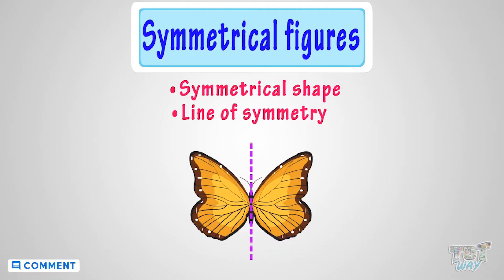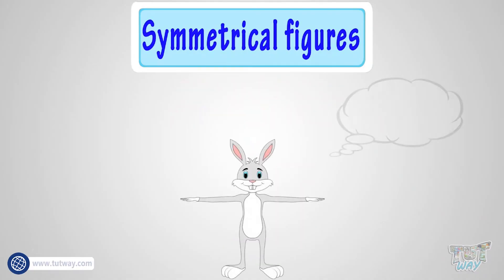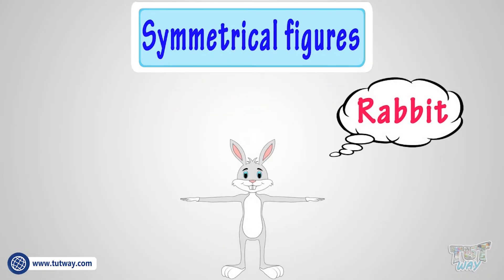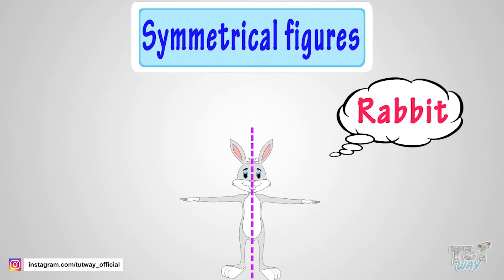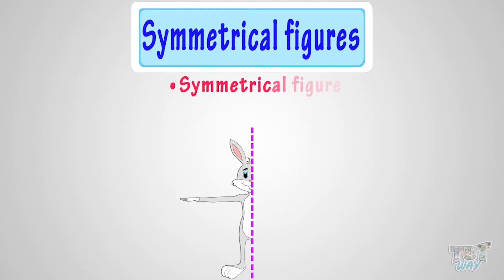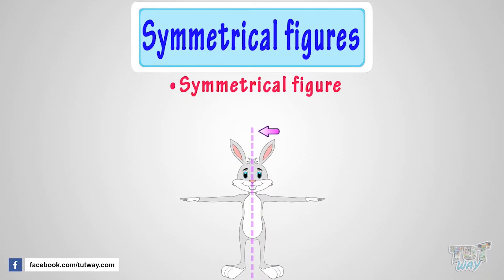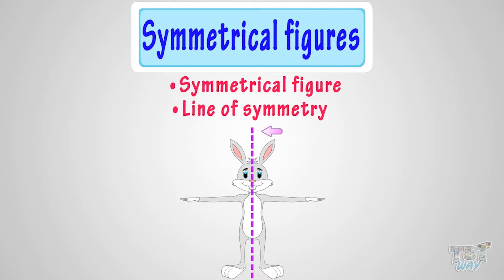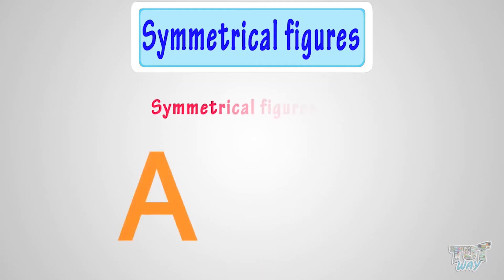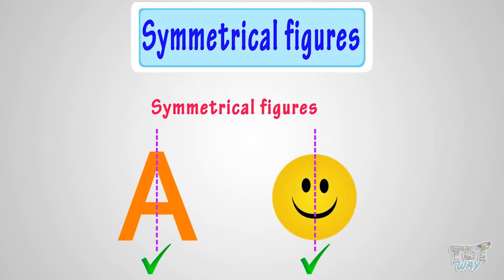Here we have another symmetrical figure — a rabbit. We can fold it exactly halfway, so it's a symmetrical figure, and the line of fold is the line of symmetry. Here are some more examples. A is a perfect example of symmetrical figures. This smiley too. Have a look at all these figures and their line of symmetry.